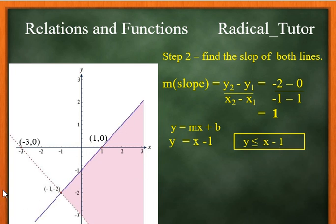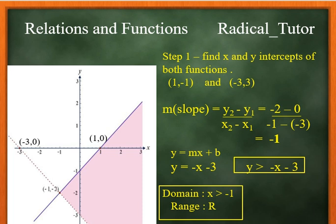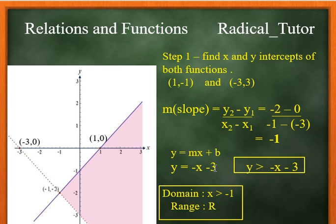For the second line, using y equals mx plus b: the two points are (negative 2, 0) and (negative 1, negative 3). The slope is (negative 2 minus 0) over (negative 1 minus negative 3), giving negative 2 over 2, which equals negative 1. So the equation is y equals negative x minus 3, and the y-intercept is minus 3.